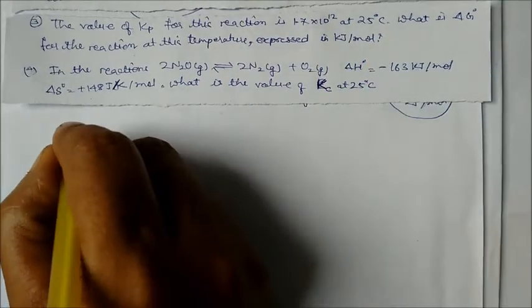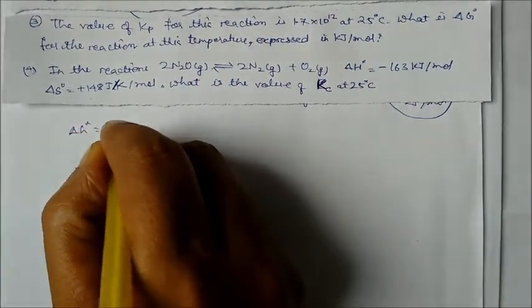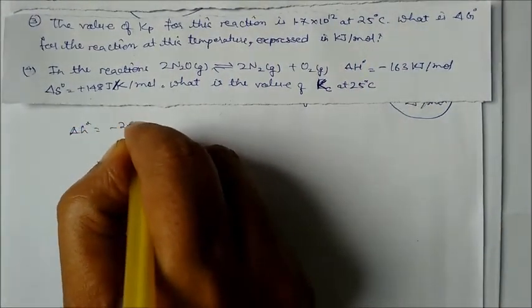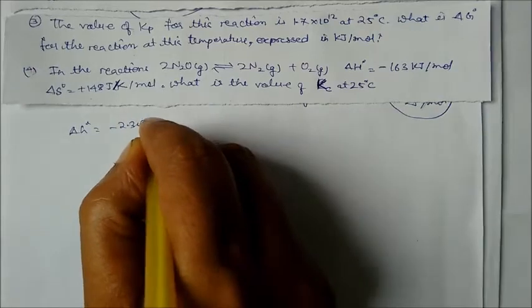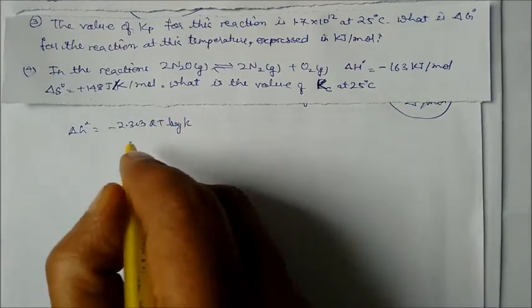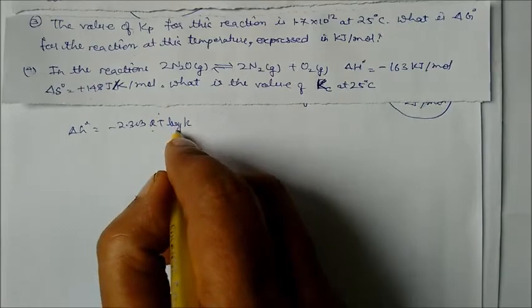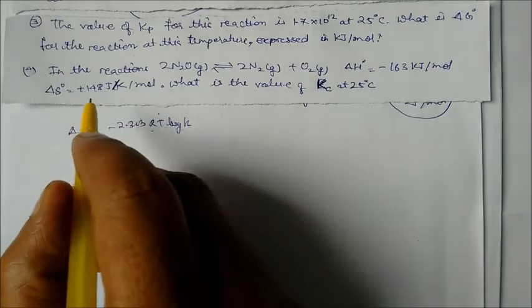For the next part, Kp is given as 1.7 × 10¹². We find ΔG° = −2.303 RT log Kp. R and temperature are known, and K is given.